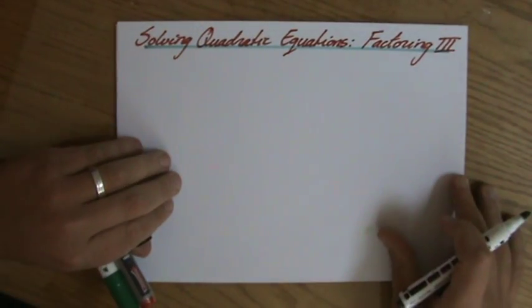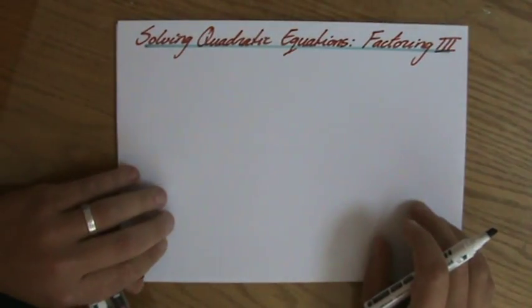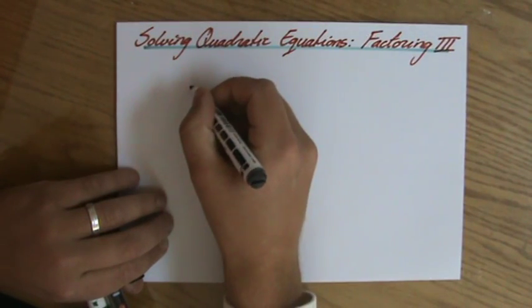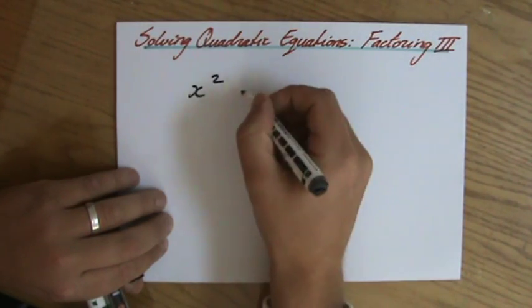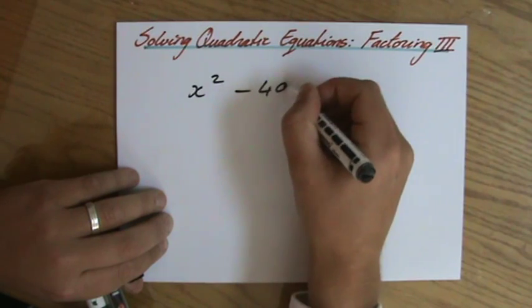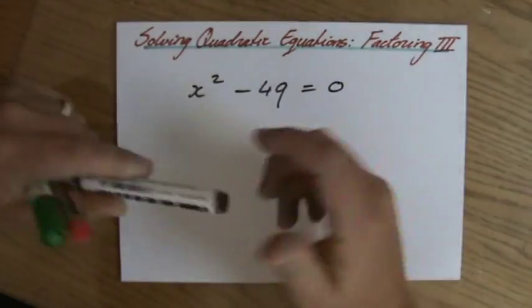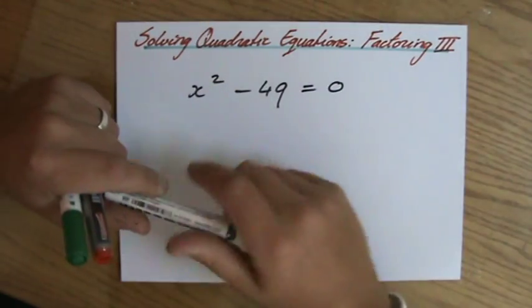We're still solving quadratic equations by factoring. Let's say I have x squared minus 49 equals 0. So it's a quadratic equation, x squared minus 49 equals 0.